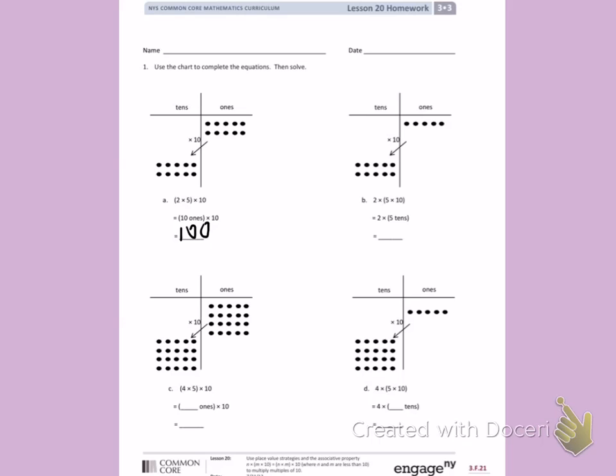Letter B. Again, I have 2 times 5 times 10. This time, they are moving 5 ones to give me two sets of 5 ones in the tens place. So, I have 2 times 5 ones.